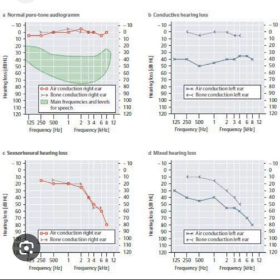Presbycusis represents the most common type of hearing loss that develops with advancing age. It occurs due to age-related structural changes in the inner ear, producing a bilateral symmetric sensorineural hearing loss that is typically worse at higher frequencies. This pattern is represented by a gradual downsloping configuration in both ears on an audiogram.